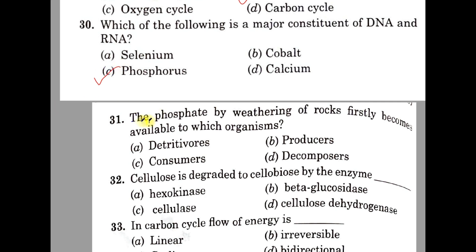Question 31. The phosphate by weathering of rocks firstly becomes available to which organism? A: Detritivores, B: Producers, C: Consumers, D: Decomposers. The correct answer is B, Producers, which are the plants.